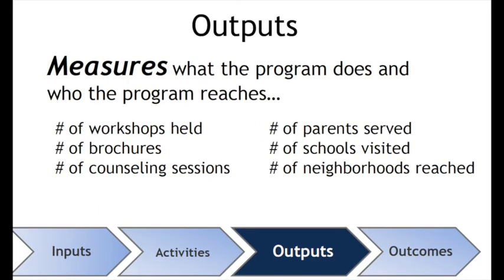The third item of the logic model is the outputs, which measure what the program does and who the program reaches. For example: the number of workshops held, the number of brochures, the number of counseling sessions, the number of parents served, the number of students visited, schools visited, and neighborhoods reached. These are the measurements your program needs in order to continue its mission, get funding, or reach its constituents.